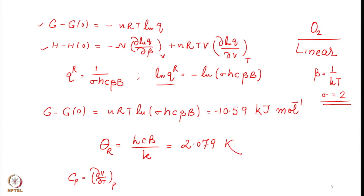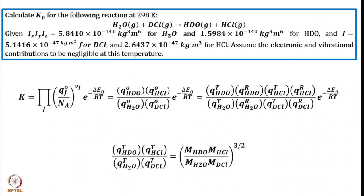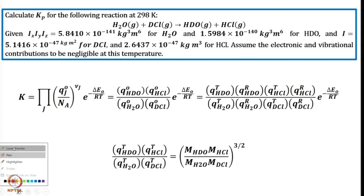I have just shown you the method — please try it yourself. Now let us go to another kind of problem, similar to one we discussed earlier. Calculate Kp for the following reaction: H₂O plus DCl forming HDO plus HCl. It is an exchange reaction and we have to find Kp.